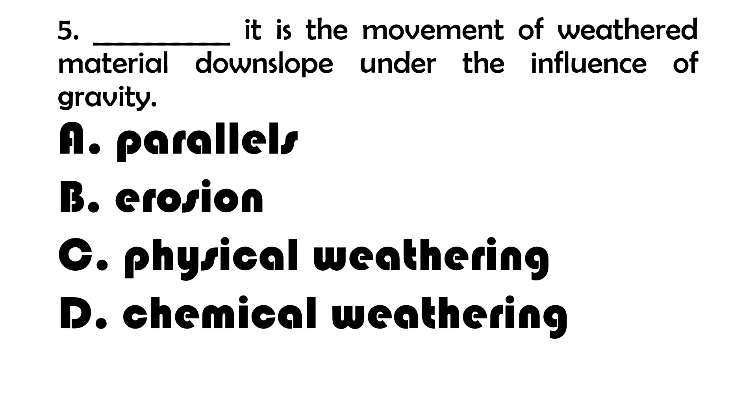Number 5. Blank, it is the movement of the weathered material downslope under the influence of gravity. A. Parallels. B. Erosion. C. Physical weathering. And letter D. Chemical weathering.